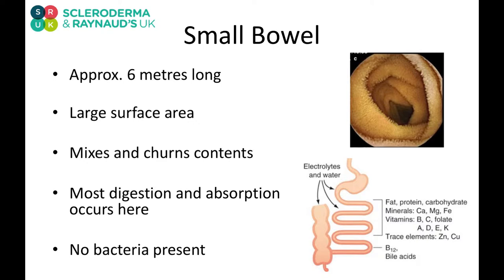We all have a small bowel. Our small bowel is very long with a very large surface area. The small bowel mixes and churns the food up and it's a site where we absorb our food and get the nutrients. The image over here shows the small bowel lumen with its large surface area caused by all these villi and microvilli. Here we have a picture showing where we absorb all our nutrients, and as you can see they're all from the small bowel.